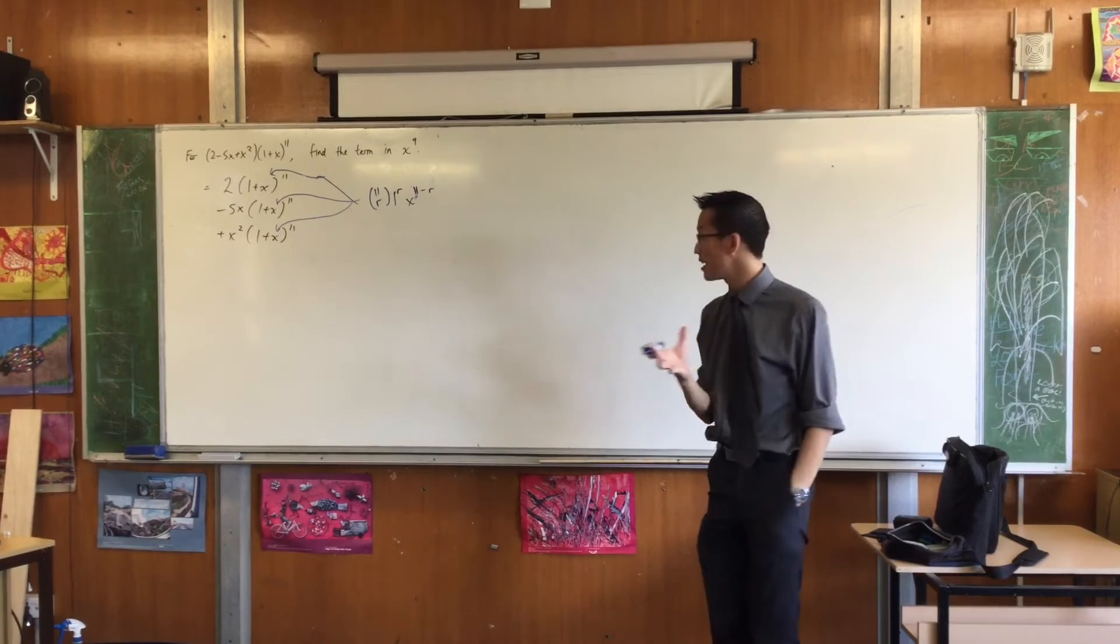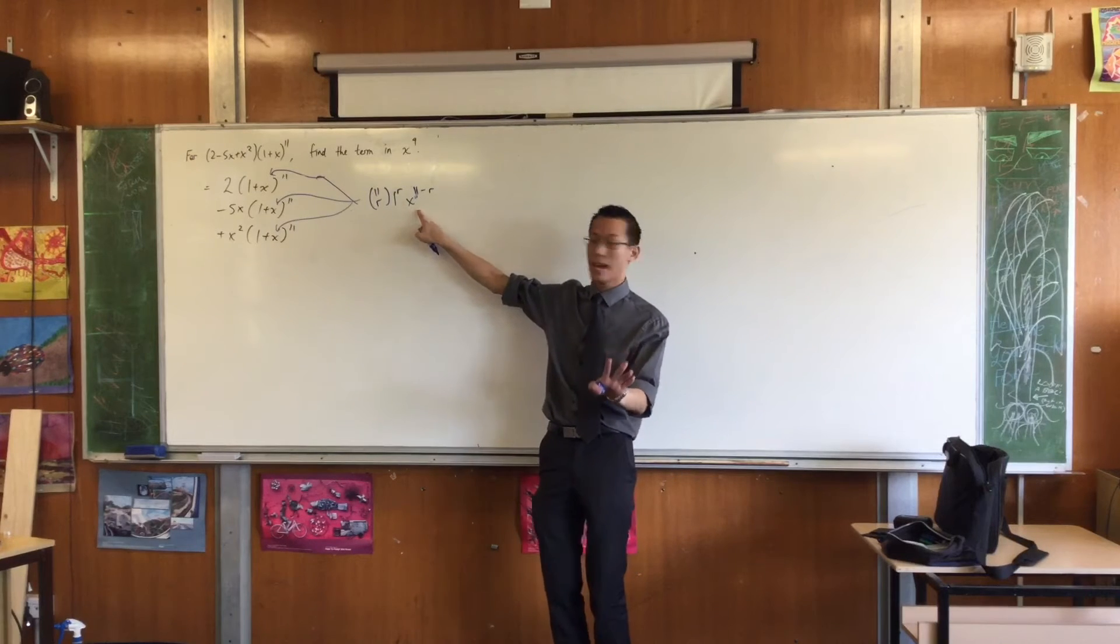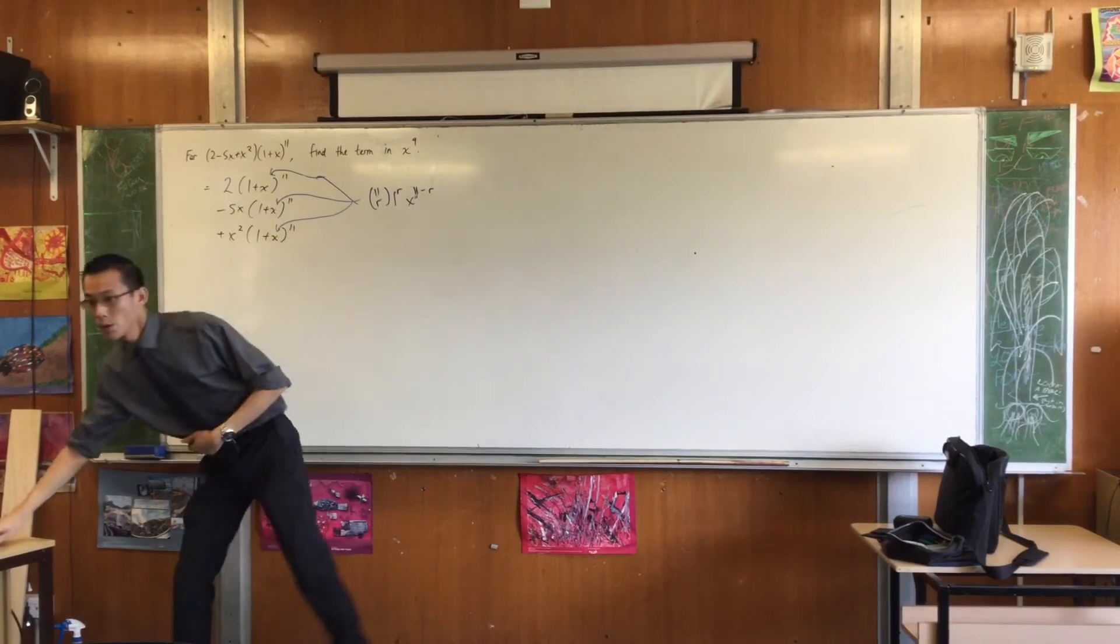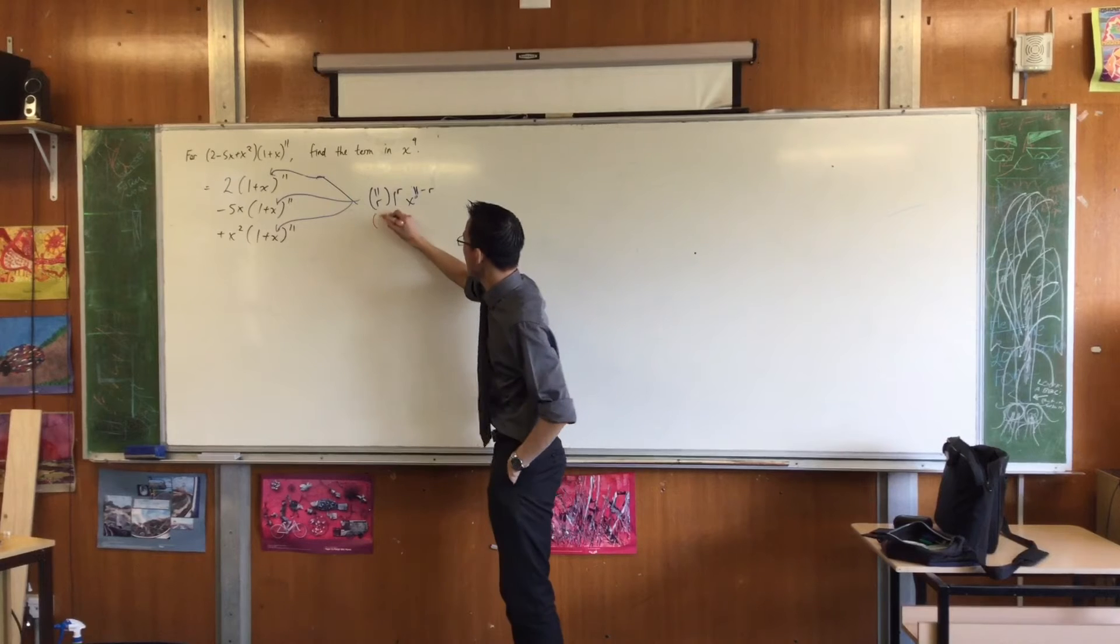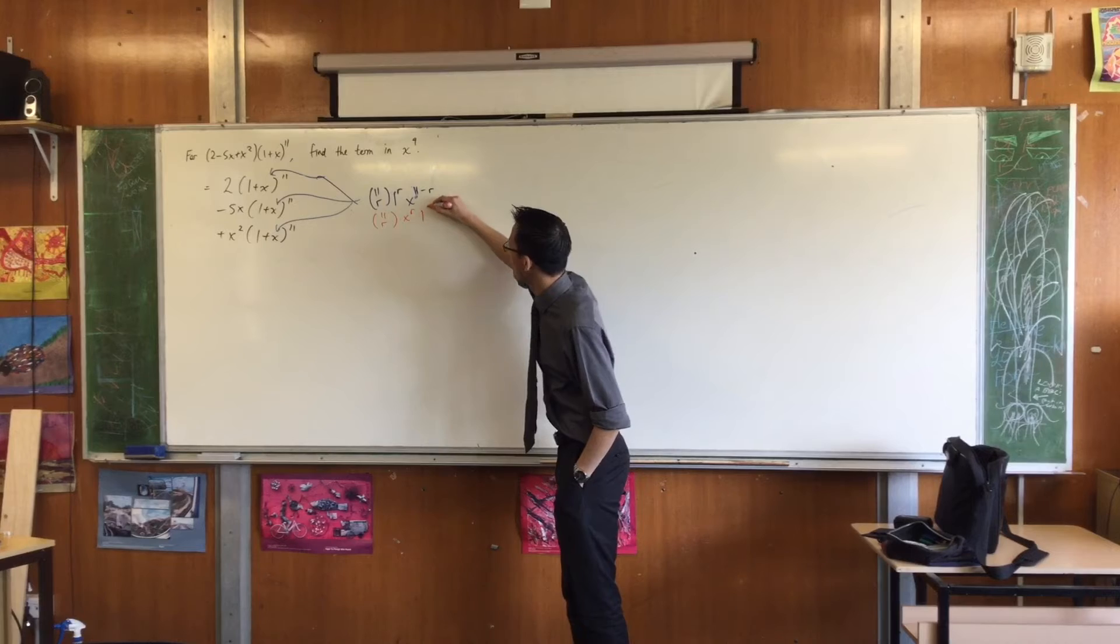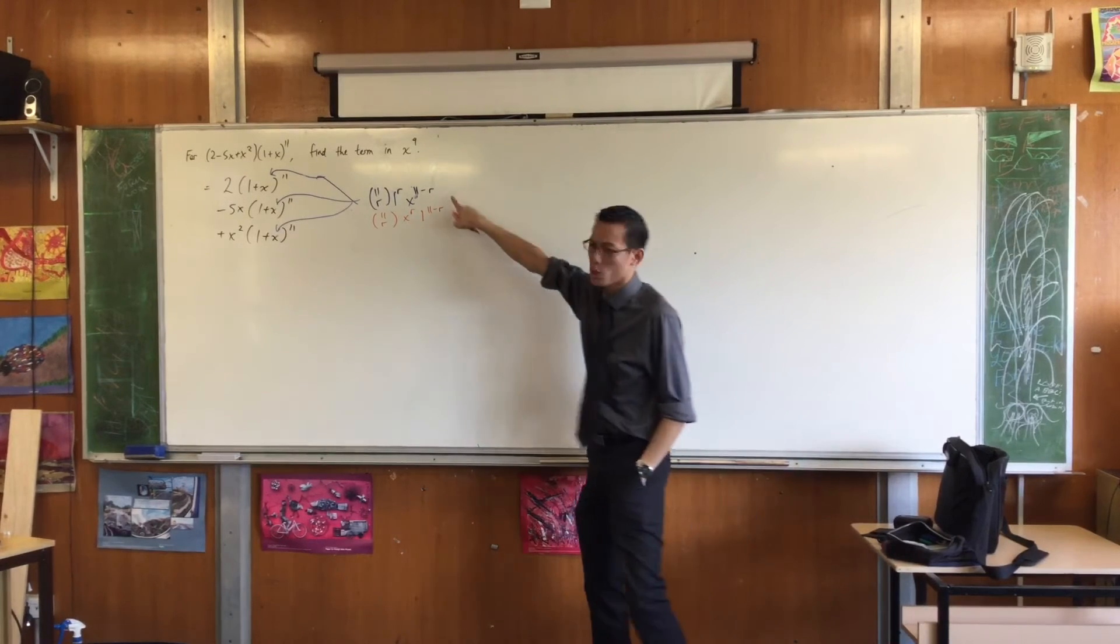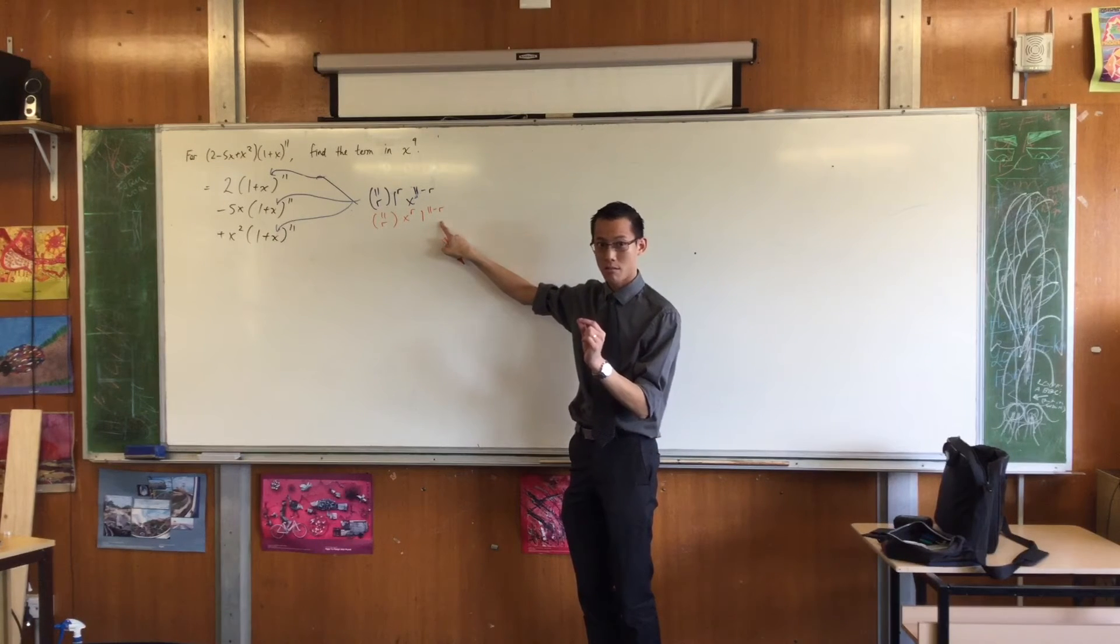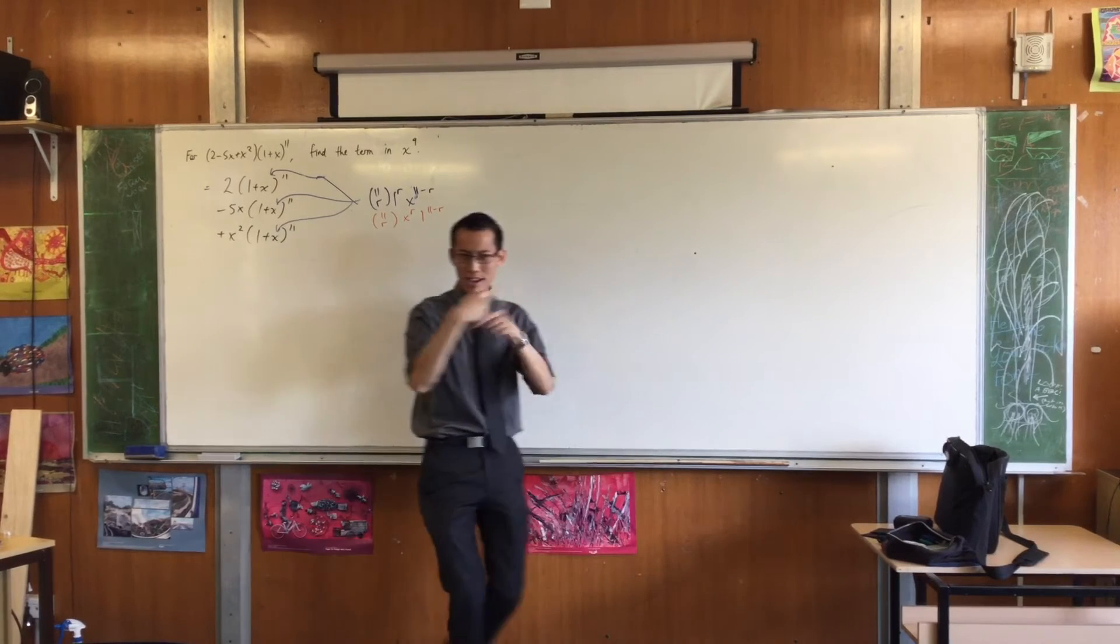Now let me just point out. Remember I said to you, we've written it with the 1 first and the x second, but it's exactly the same if I turn it around, yeah? In this case, I actually am going to turn it around. I wonder if you can see why. If I write it like this instead, x to the r, 1 to the 11 minus r. Can you see why this just had a tiny edge? This will still give you the right answer, but this is just a teeny little bit easier to work with. Can anyone see why?